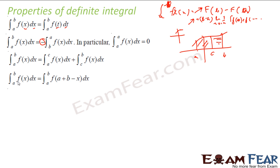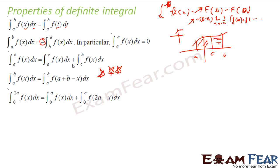The integral of f dx from a to b is nothing but the integral of f(a + b − x) dx from a to b. This is a critical formula that we use very, very frequently — please understand and remember this. Similarly, the integral of f dx from 0 to 2a is nothing but the integral of f dx from 0 to a plus the integral of f(2a − x) dx from 0 to a.